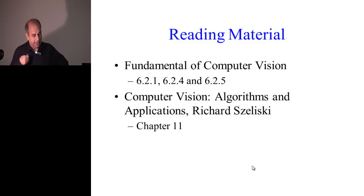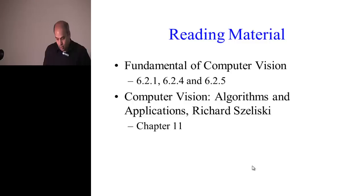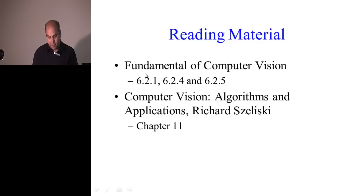Gradient descent is another way to find the minimum of a function — start somewhere, take a step downhill, and keep going. There is a nice description of this along with simulated annealing in the textbook. You should look at those sections, as well as chapter 11 of Zaleski's book for a full discussion on stereo.